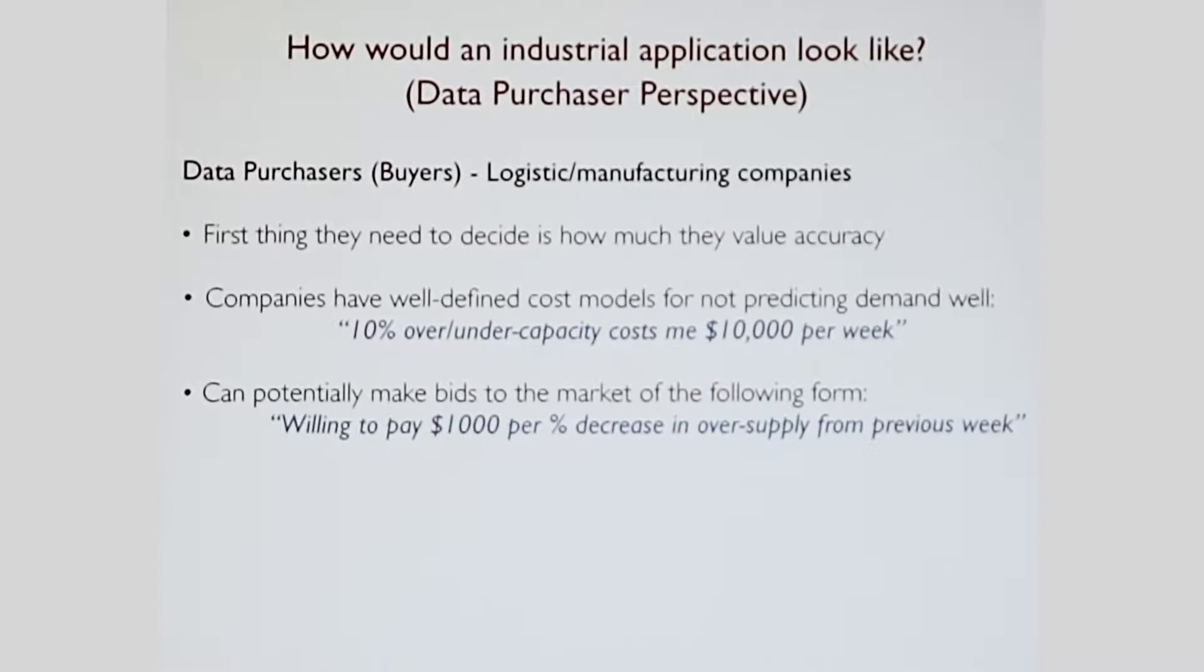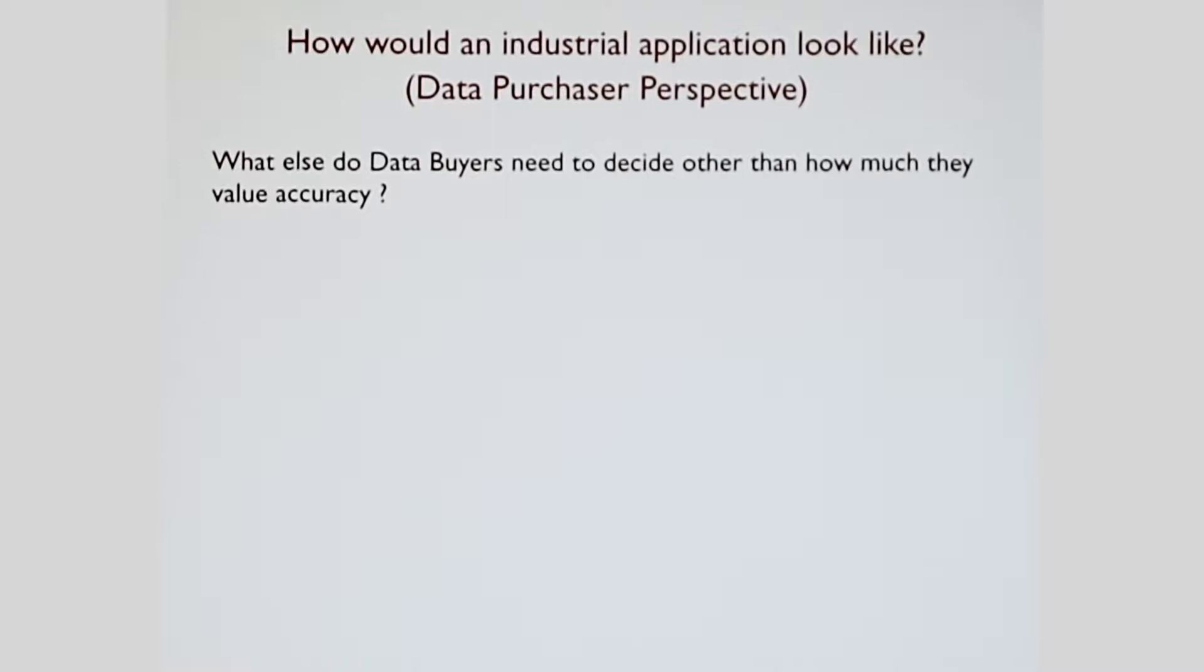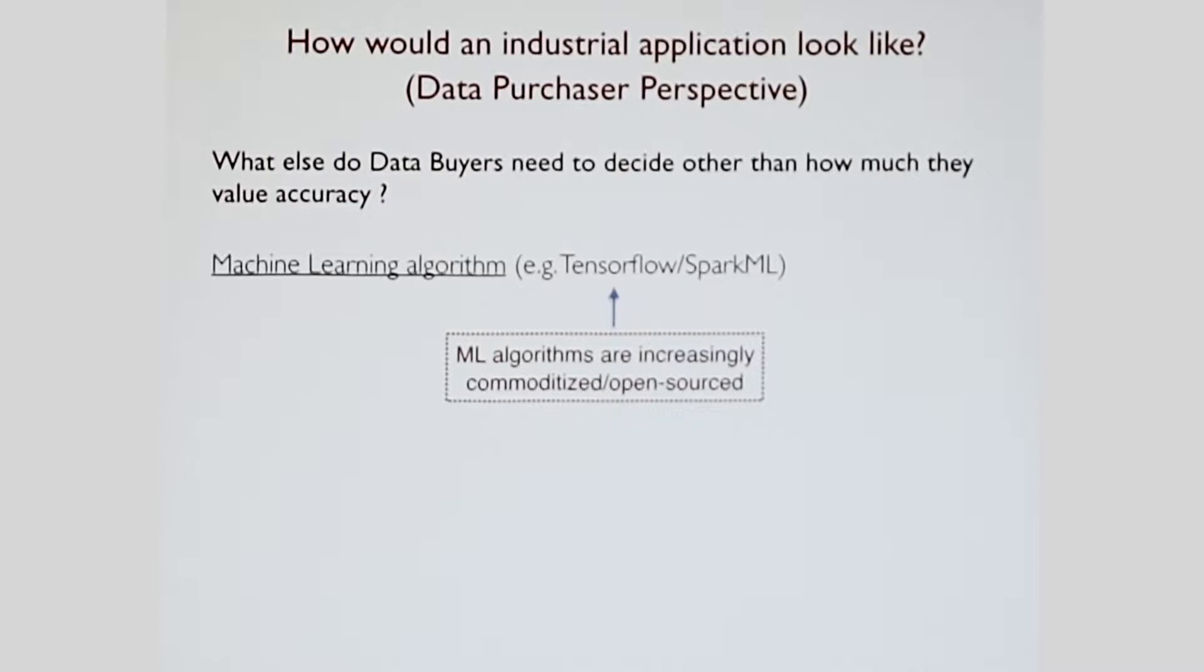In this market, the buyers would be something like the logistics and the manufacturing companies. If they want to participate, what's the first thing they need to decide? They need to decide how much they value accuracy. The good thing is such companies have well-defined cost models for not predicting demand well. For example, they can say a 10% over-end of capacity cost me $10,000 per week. So you can potentially make a bid of the following form: they're willing to pay $1,000 for every percent decrease in oversupply from the previous week. The next question is, what else do they need to decide? Well, the machine learning algorithm. The dirty little secret no one tells you is that machine learning algorithms are increasingly commoditized and open source. Everyone's using the same thing. No company is differentiating itself based on the machine learning algorithm it uses, it's mostly the data they have access to.